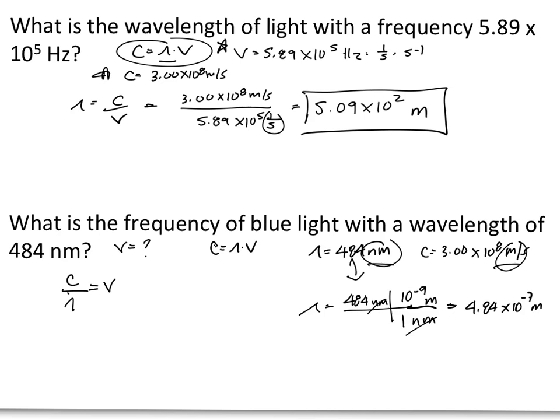So 3.00 × 10⁸ meters per second divided by 4.84 × 10⁻⁷ meters. That will give us our frequency.